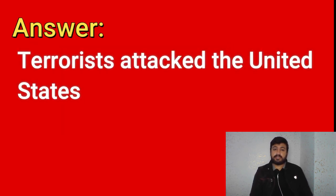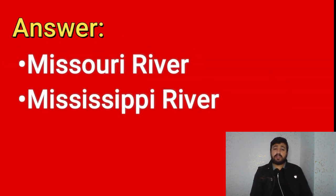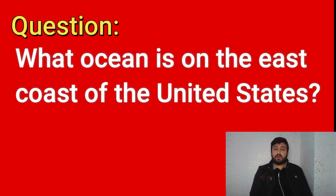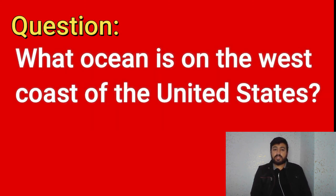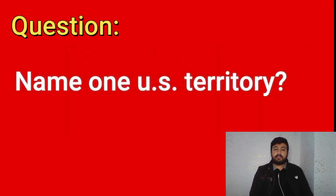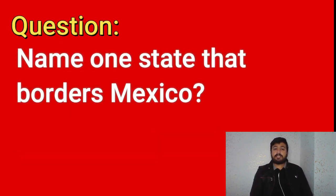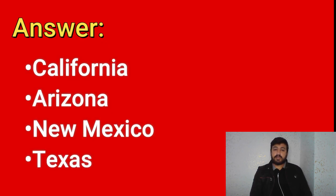Name one of the two longest rivers in the United States: Missouri River, Mississippi River. What ocean is on the east coast of the United States? The Atlantic Ocean. What ocean is on the west coast of the United States? The Pacific Ocean. Name one U.S. territory: Puerto Rico, U.S. Virgin Islands, American Samoa, Northern Mariana Islands, Guam. Name one state that borders Mexico: California, Arizona, New Mexico, Texas. Where is the Statue of Liberty? New York Harbor.